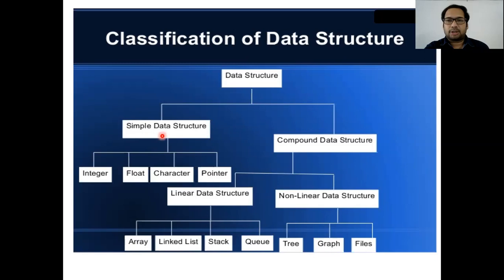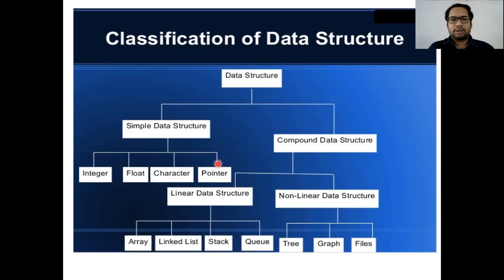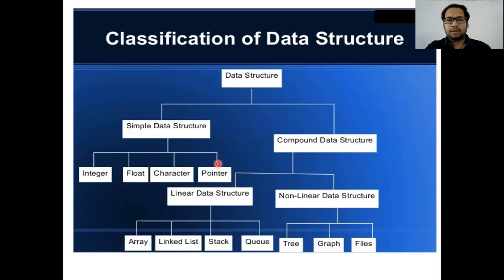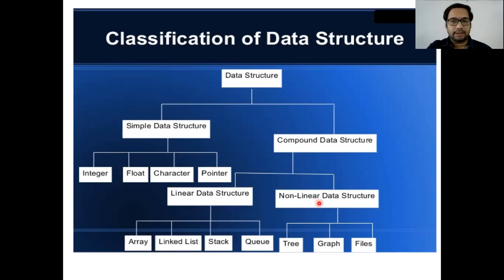Simple data structures you might have used in C — variables of int, float, char, or pointers. These are simple data structures where limited data can be stored. If you want to store data in bulk, you can use compound data structures, which are divided further into two parts: linear data structure and non-linear data structure.